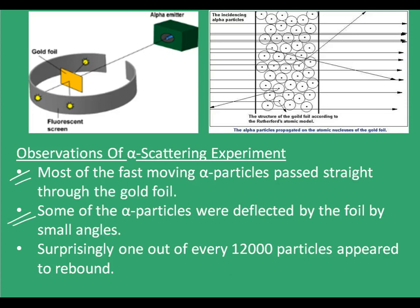Surprisingly, one out of every 12,000 particles appeared to rebound. As we see in this figure, the alpha particles are bombarded on this thin gold foil. Most of them pass through in a straight line without getting deflected, but some get deflected by some angle. And very few — just one in this figure — get deflected back into the direction in which they came from.